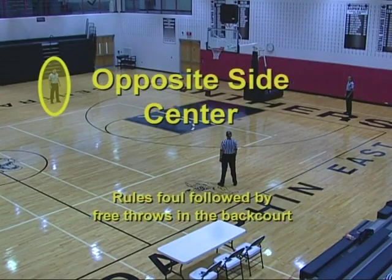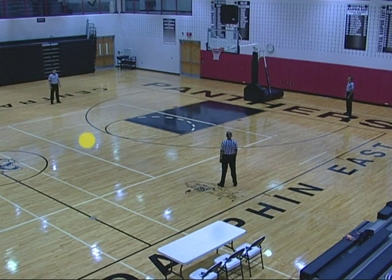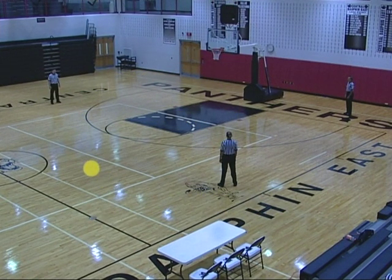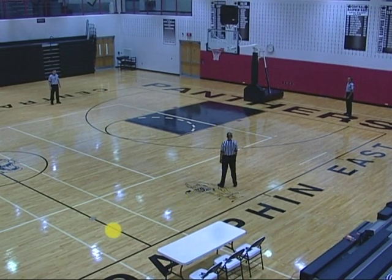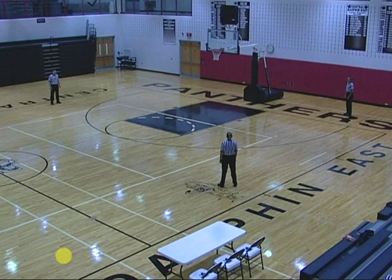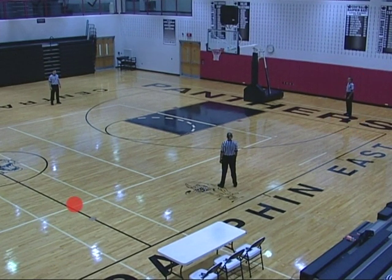Opposite side center rules foul, followed by free throws in the backcourt. Proceeds to the reporting area, reports the foul, and becomes opposite side center. Table side trail becomes table side lead and handles the free throws. Table side lead becomes table side trail.